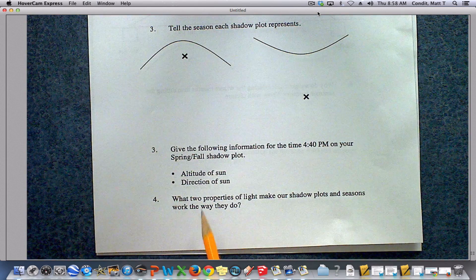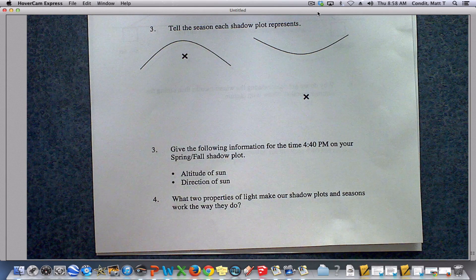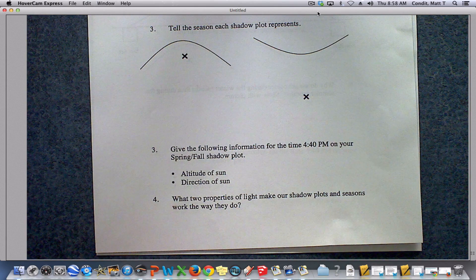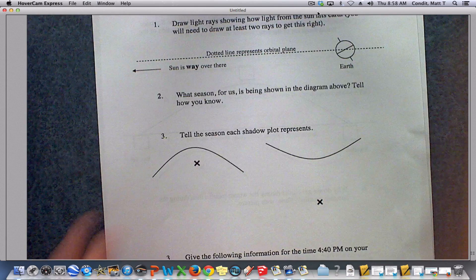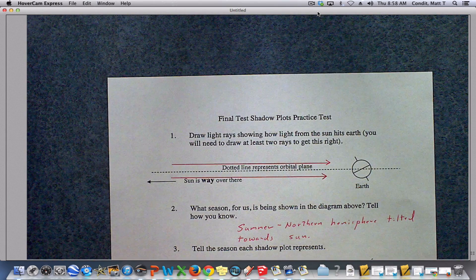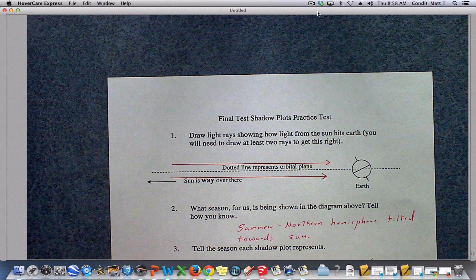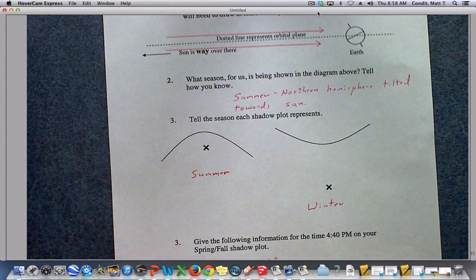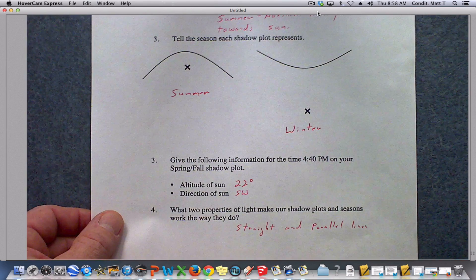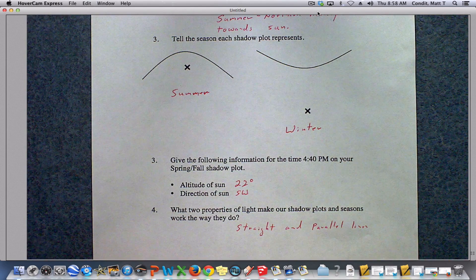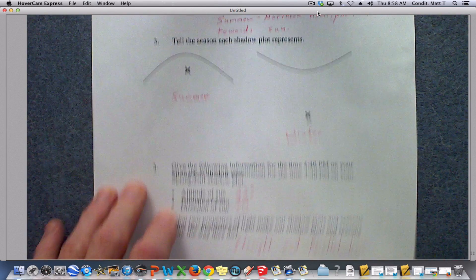The next question, what two properties of light make our shadow plots and seasons work the way they do? Well, really, the two properties we've already drawn at the top of the paper. And they are that it travels in straight lines and it hits the earth in parallel lines from the sun. So straight and parallel lines are the two key things that make our shadow plots behave the way they do.